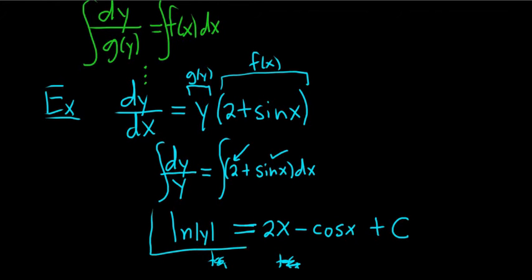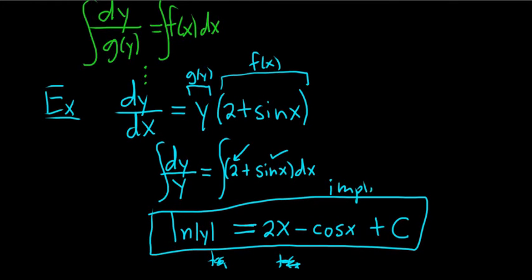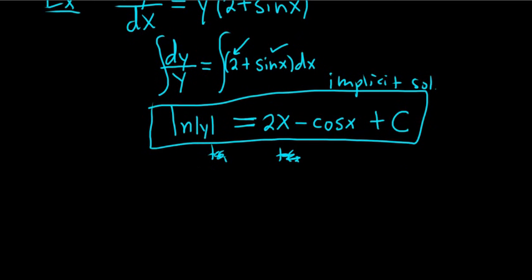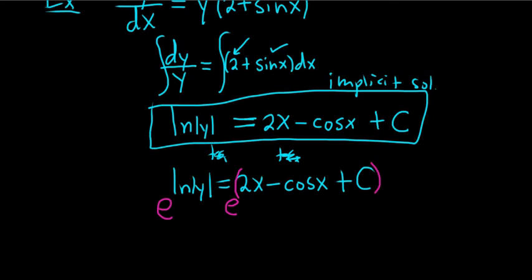This would be an acceptable answer. This is called an implicit solution to the differential equation because we have not solved for y. Let me show you how to solve for y. So to solve for y, let me rewrite it again. This is equal to 2x minus cosine x plus c. So to solve for y, you have to get rid of the natural logarithm. So what you do is you exponentiate both sides. So you put an e here and you put an e here. And then this entire right-hand piece is actually an exponent. These cancel. You get the absolute value of y.